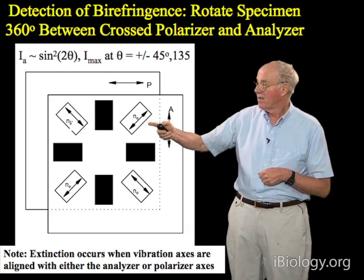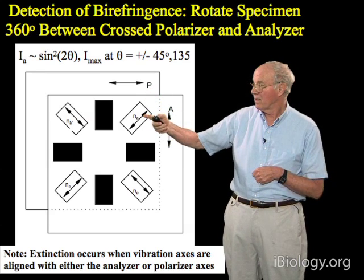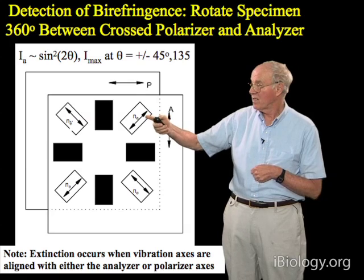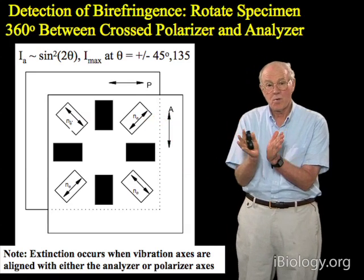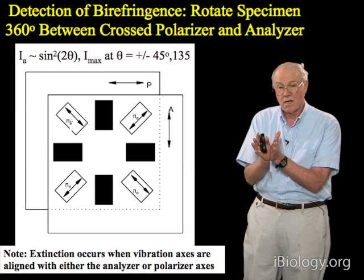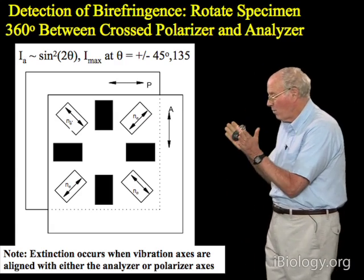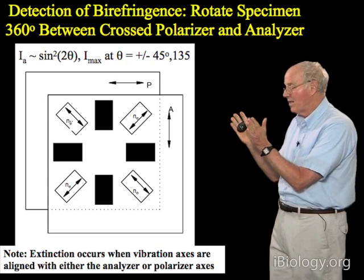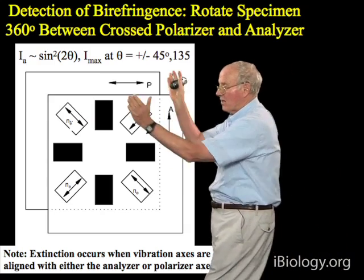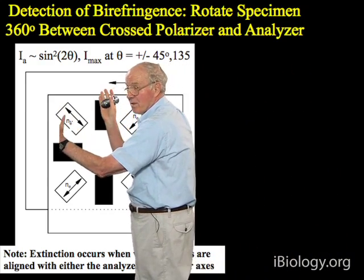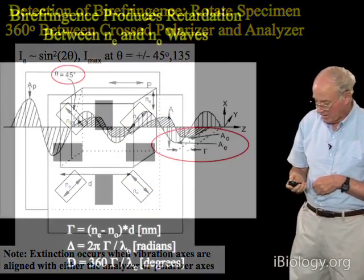In between extinction positions, when plane polarized light hits the specimen, it is instantly converted to two orthogonally polarized light beams — one is the n sub e wave and one is the n sub o wave. The n sub o moves faster, so it passes through the specimen more quickly.